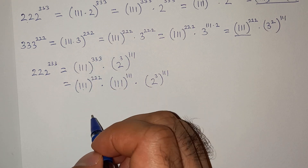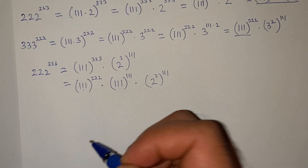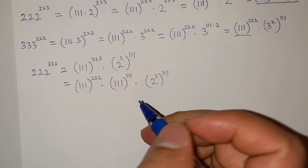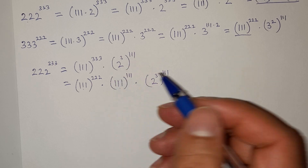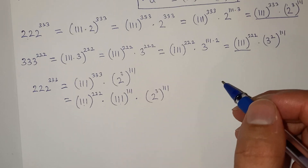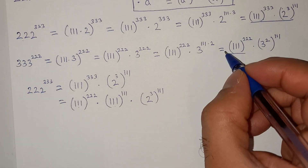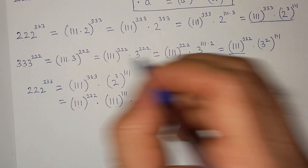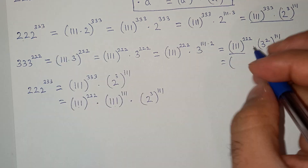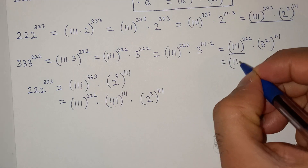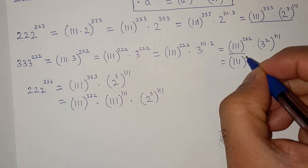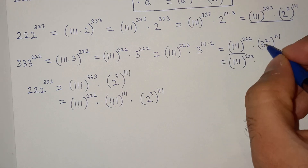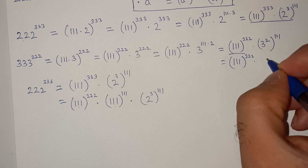Alright, so in this expression we have triple 1 power triple 2, and then 3 square is nine power triple 1.